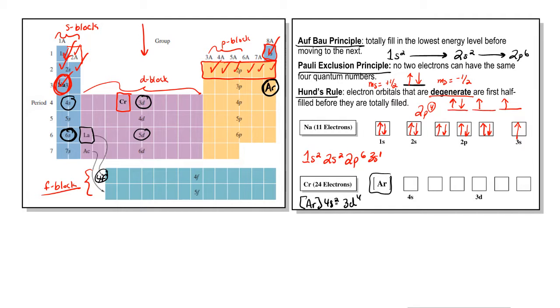But here's the thing, a neutral element cannot end with D4 or D9. So again, a neutral element cannot end with D4 or D9, which means that this row here and this row here, they cannot be allowed to end with D4 or D9. What happens here is we take 1 from the S and toss it over to the D because D is most stable when it's half filled or totally filled.